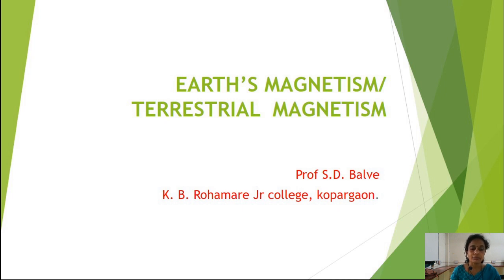Sir William Gilbert was the first scientist to investigate the phenomena of magnetism. According to Gilbert, the origin of magnetism is due to circulating electric current. The first point related to the origin of magnetism is that the rotation of the earth about its own axis is responsible for the generation of electric current, and there is electrification due to hot air near the equator moving towards the north and south hemispheres.